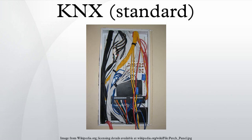KNX is a fully distributed network which accommodates up to 65,536 devices in a 16-bit individual address space. The logical topology allows 256 devices on one line. Lines may be grouped together with a main line into an area; up to 15 lines can be connected to a main line via a line coupler for a total of 16 lines. The line couplers have physical addresses from 1.1.0 to 1.15.0.